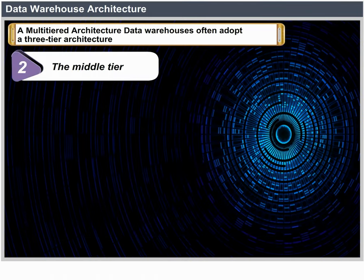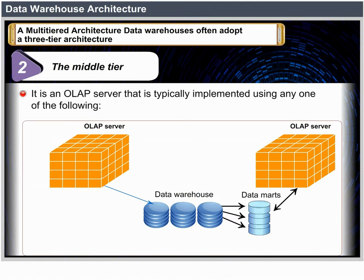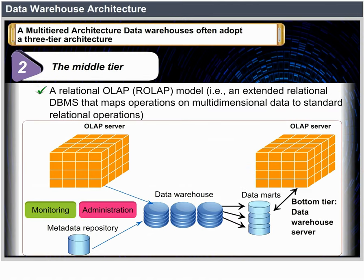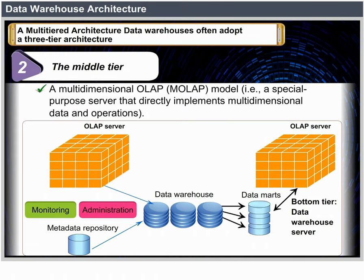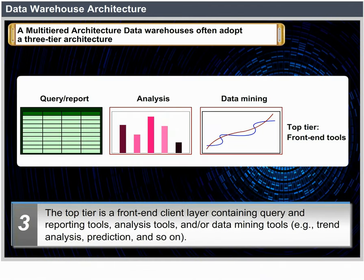The middle tier is an OLAP server typically implemented using either a Relational OLAP (ROLAP) model — an extended relational DBMS that maps operations on multidimensional data to standard relational operations — or a Multidimensional OLAP (MOLAP) model, a special-purpose server that directly implements multidimensional data and operations. The top tier is a front-end client layer which contains query and reporting tools, analysis tools and/or data mining tools such as trend analysis, prediction and so on.